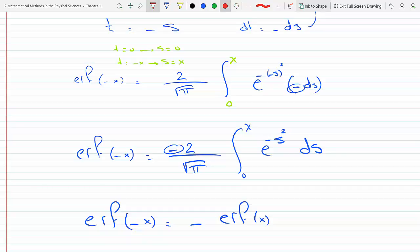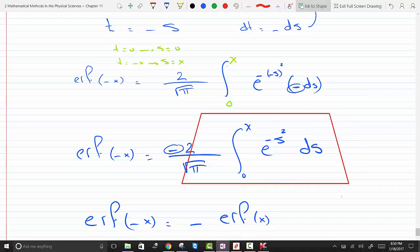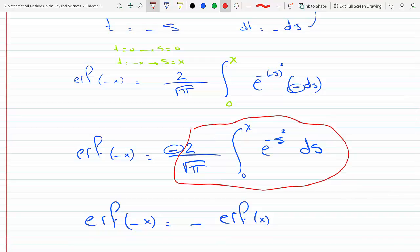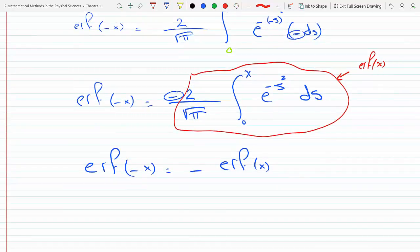Because, excluding the minus sign, this here is just erf of x, and there's a minus, so it becomes minus erf of x. So in other words, I've proven that f of minus x is equal to the original f of x times minus 1. So therefore, this proves that the erf function, therefore erf of x, is indeed an odd function.